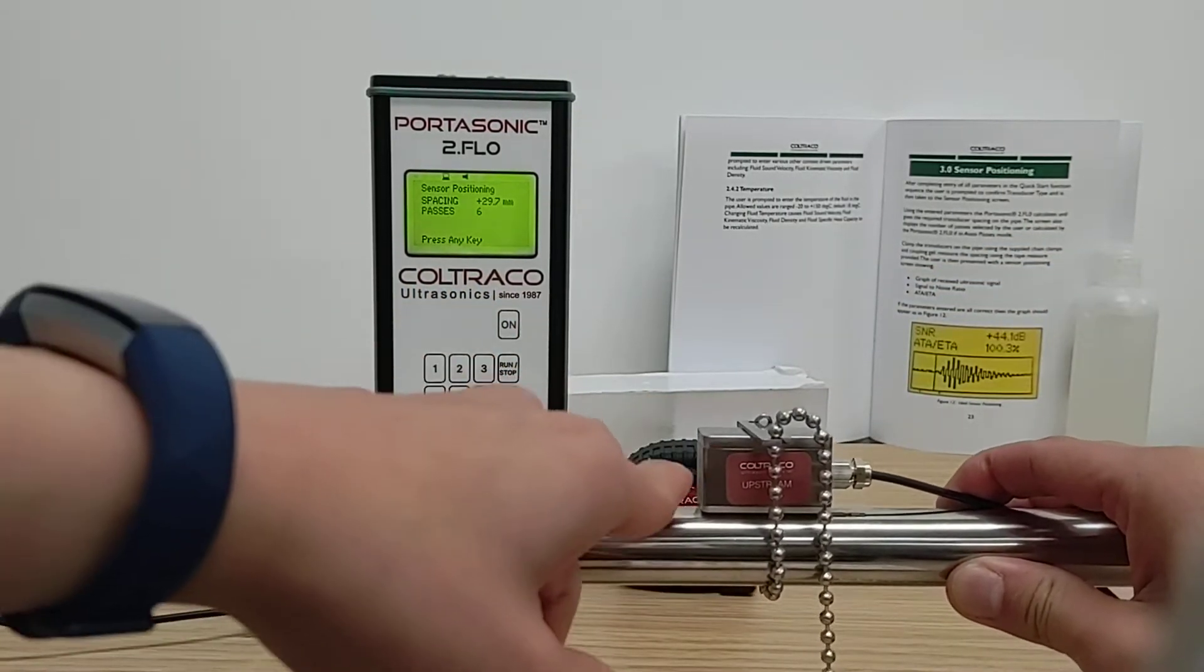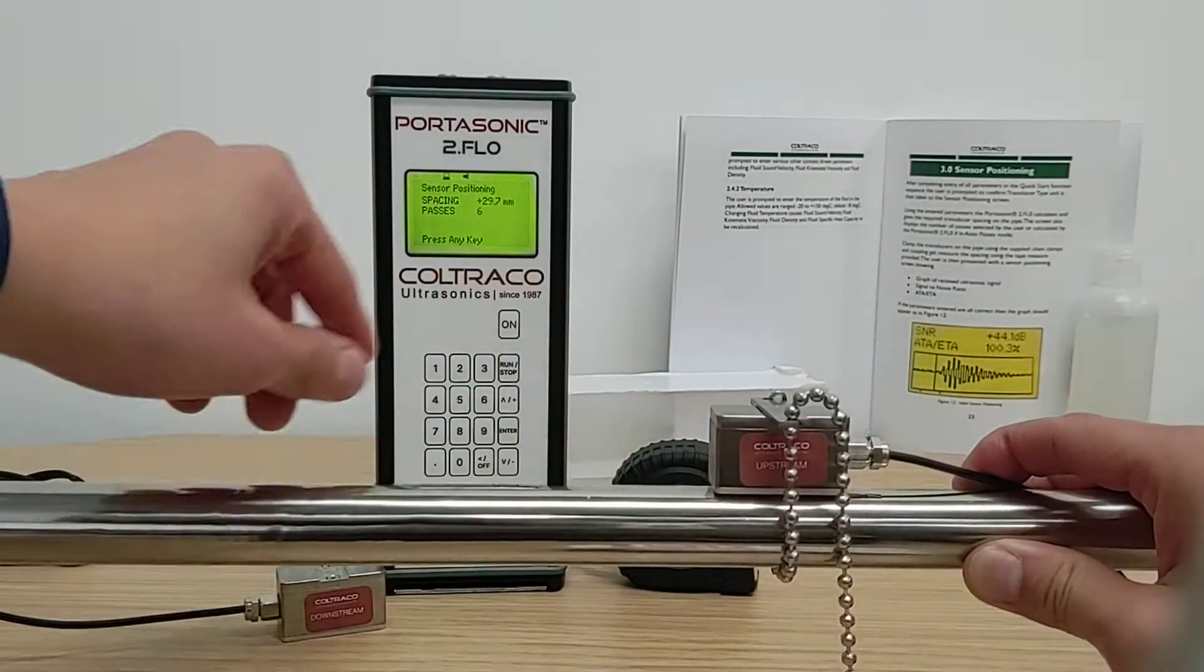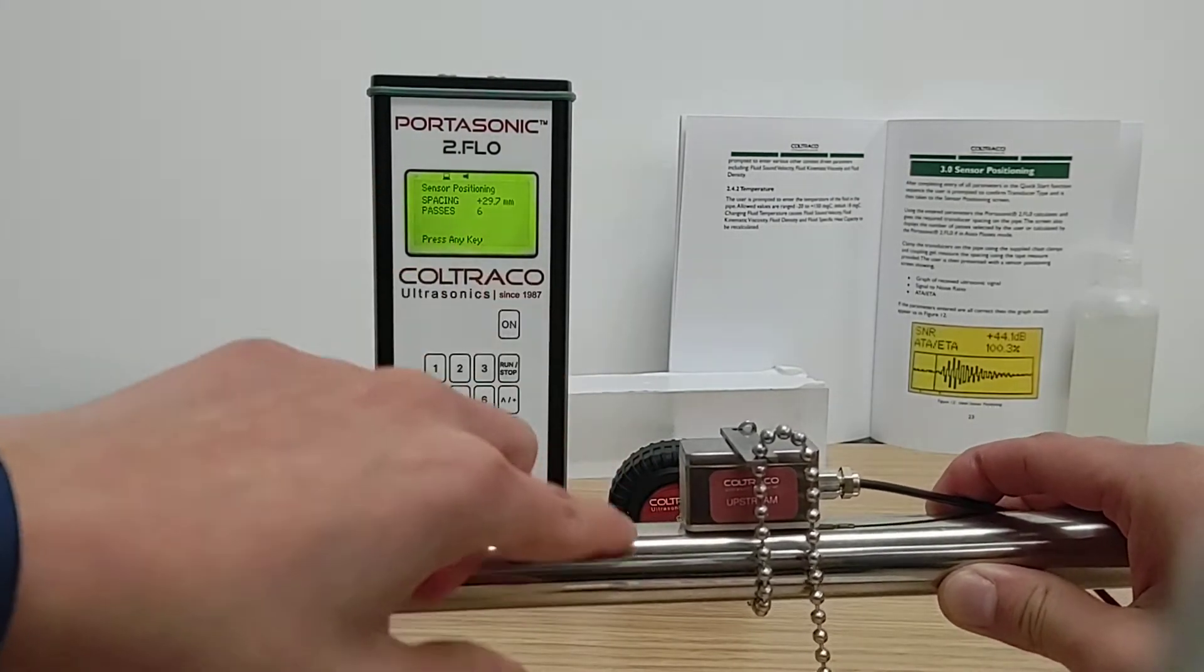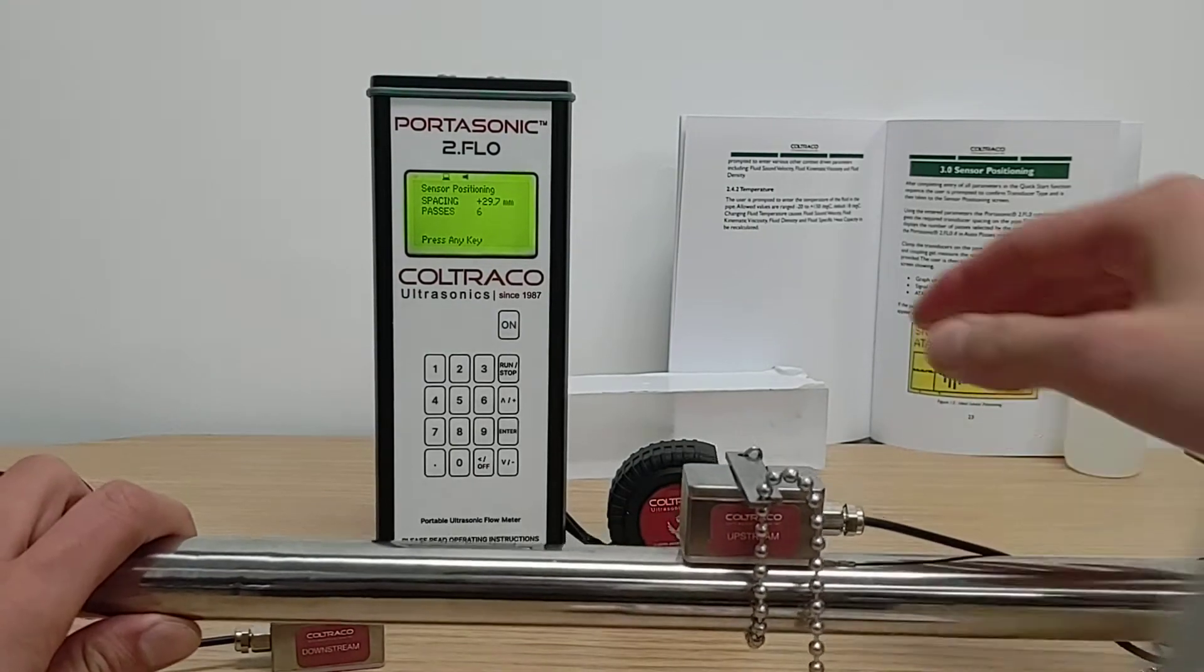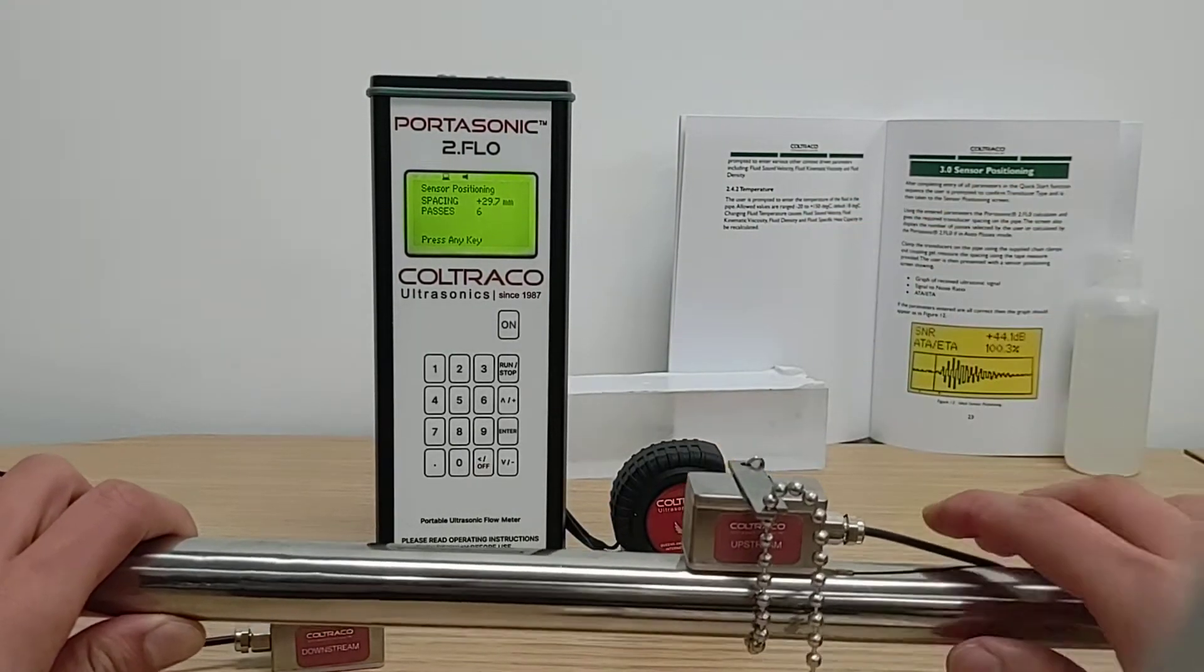Then you need to measure the distance of your second sensor to ensure it matches the sensor positioning screen in the Portasonic two-point flow, measuring the distance using the measuring tape.